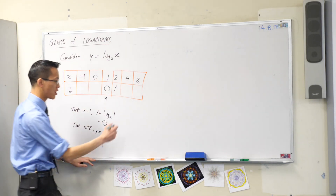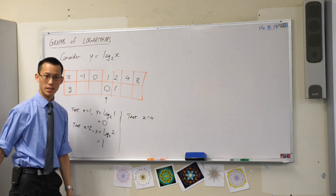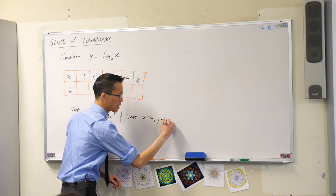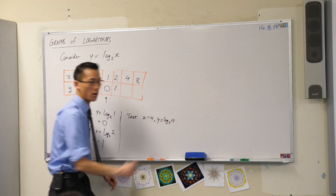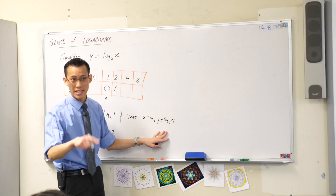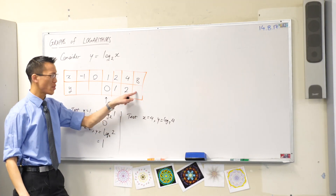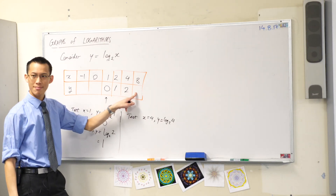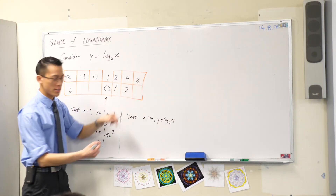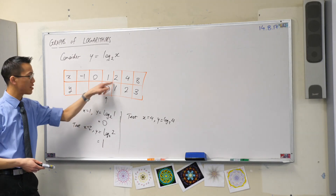We'll do one more and then you can tell me the last one. Let's test x equals 4. If x is equal to 4, then y is log base 2 of 4 — so 2 to the power of something gives you 4. You've already worked out the pattern: 2 squared is 4, so that's 2. Now can you tell me what log base 2 of 8 is? 2 to the power of something gives you 8 — it's 3, because 2 cubed is 8. So now you can see why I chose these numbers. They were not random.